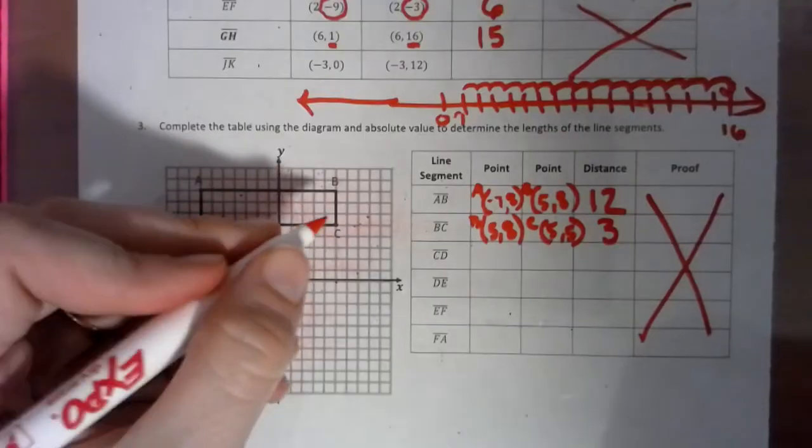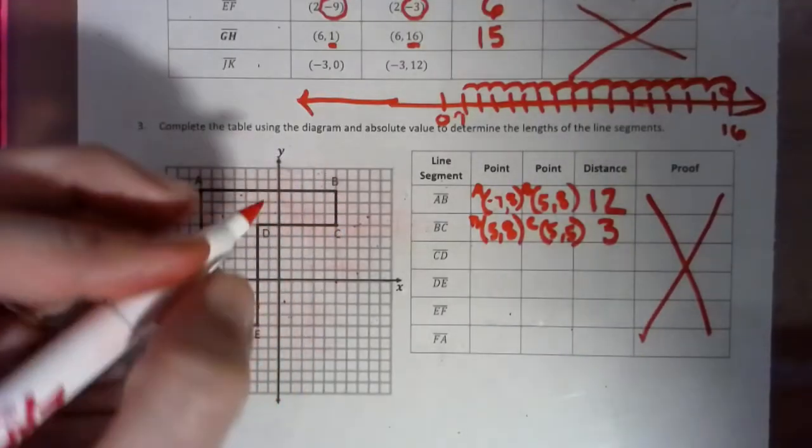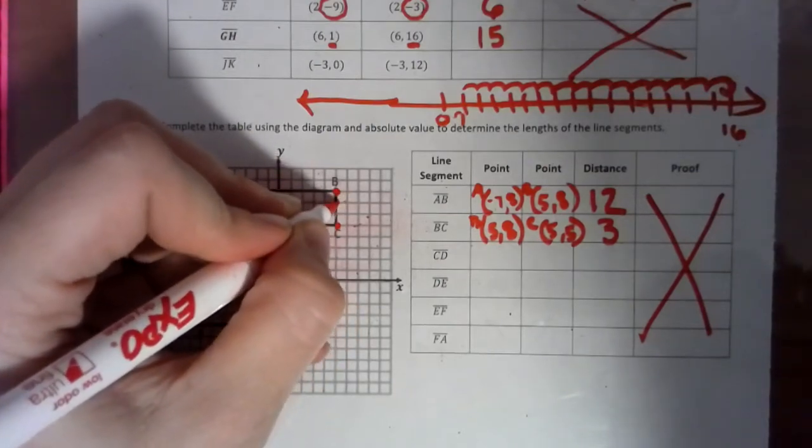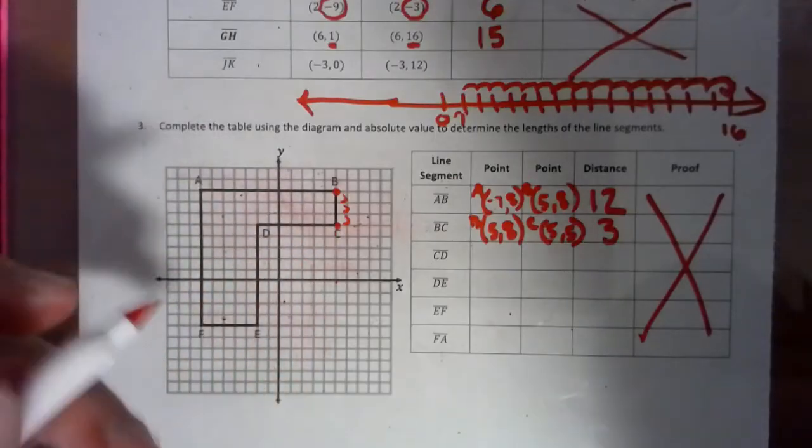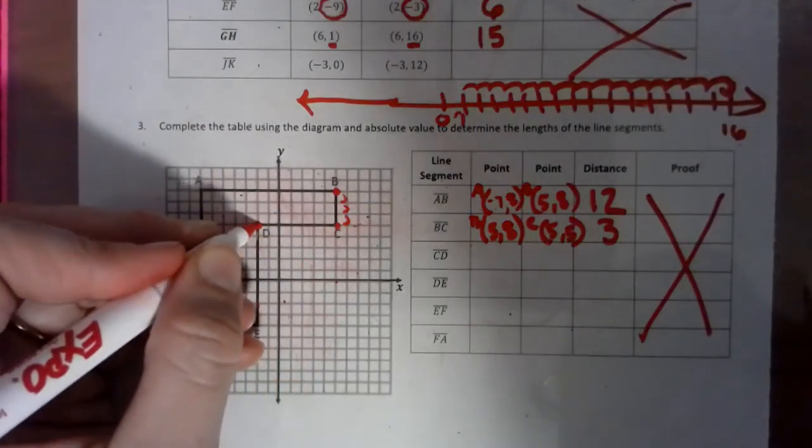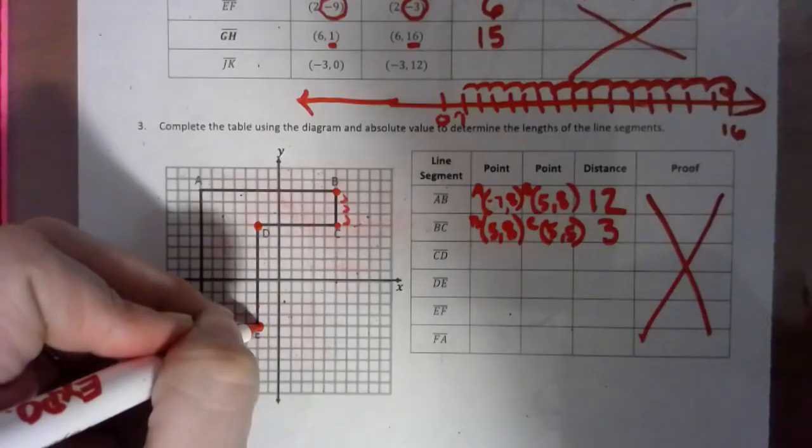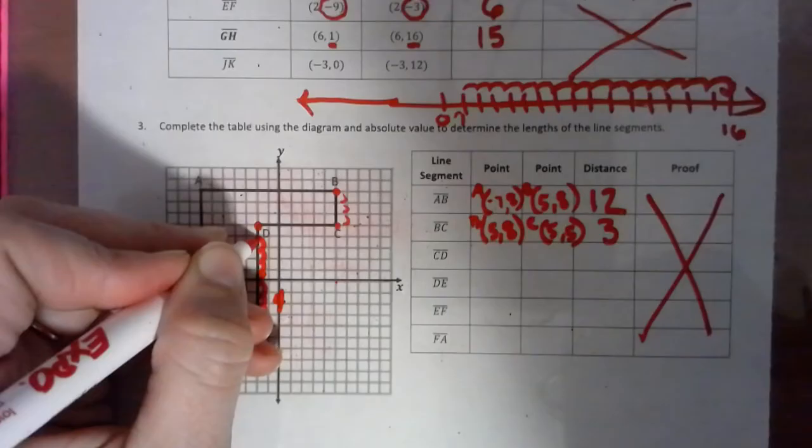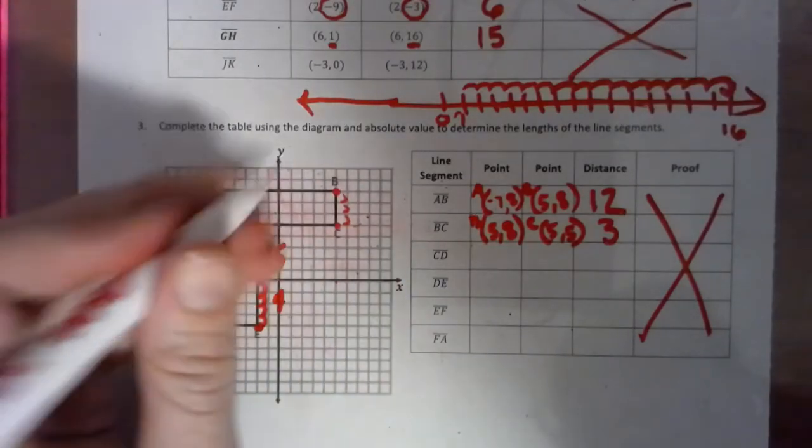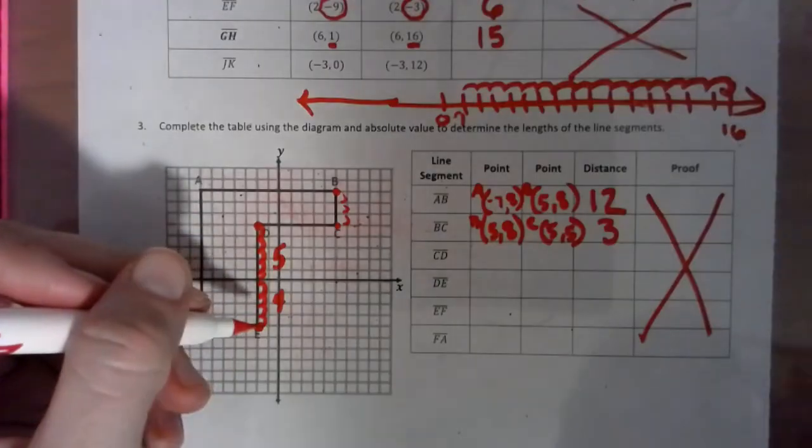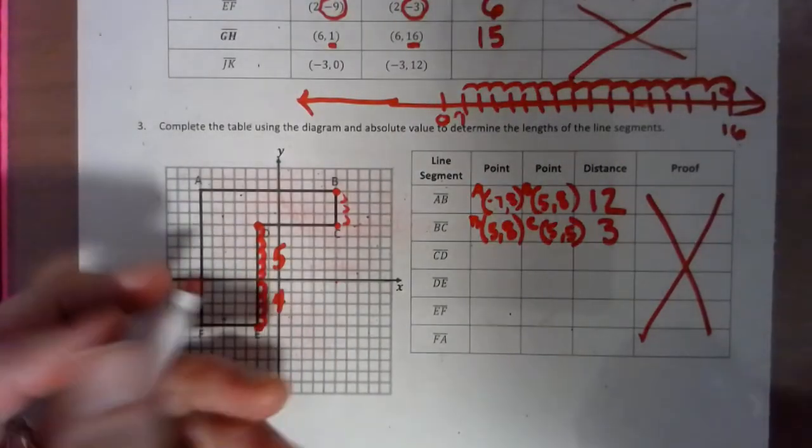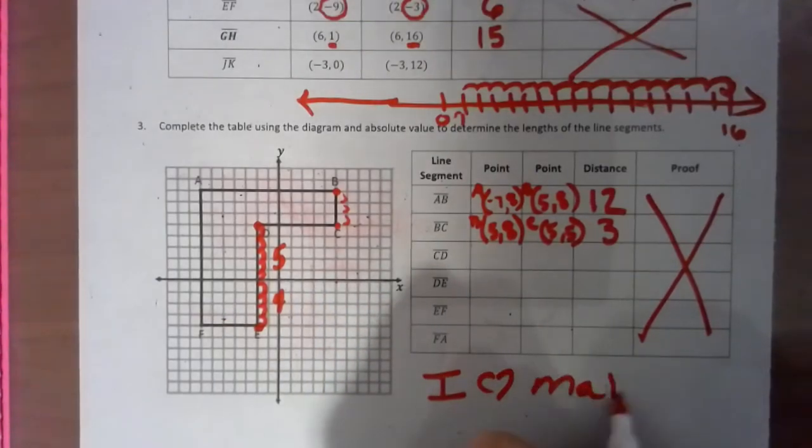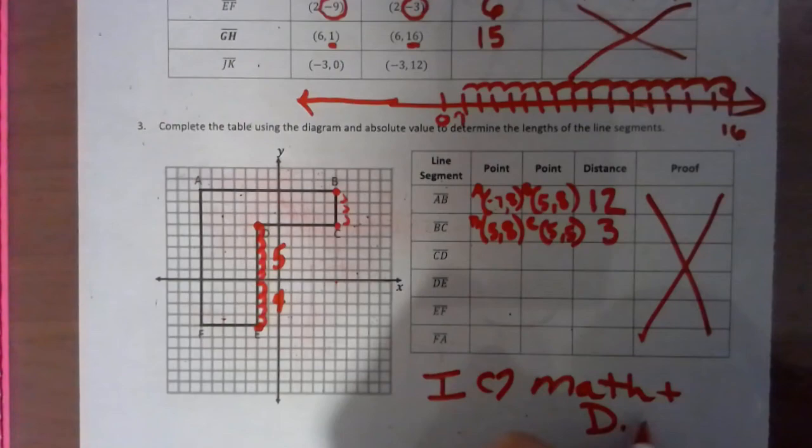So basically, an easy thing to think about is counting the jumps, but it's from the corner to the corner, so you're kind of going 1 jump, 2 jumps, 3 jumps. And if you kind of think from D to E, you're going 1 jump, 2 jumps, 3 jumps, 4 jumps, and then 1, 2, 3, 4, 5, and you could think, hey, I'm crossing over the axes, so 4 and 5 make 9 jumps. So another way of looking at it. And as always, I love math and diet coke.